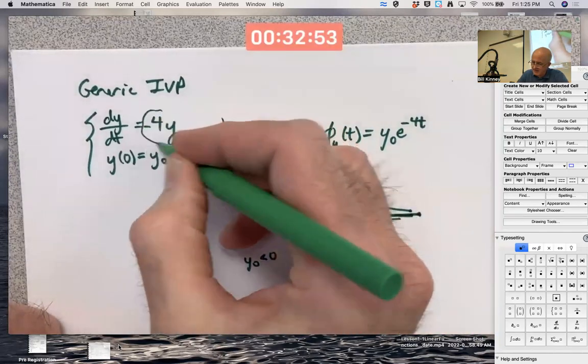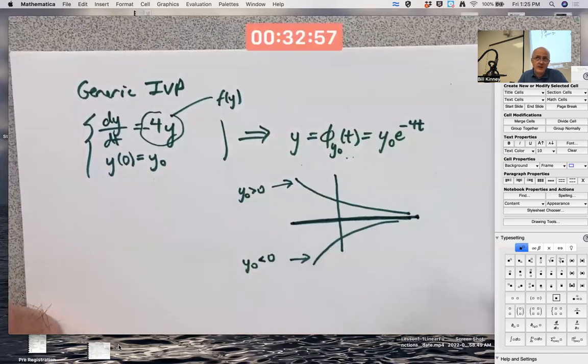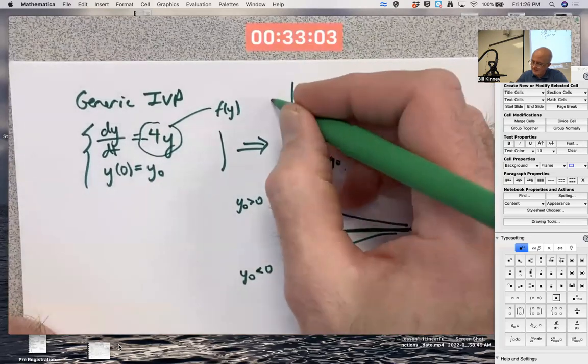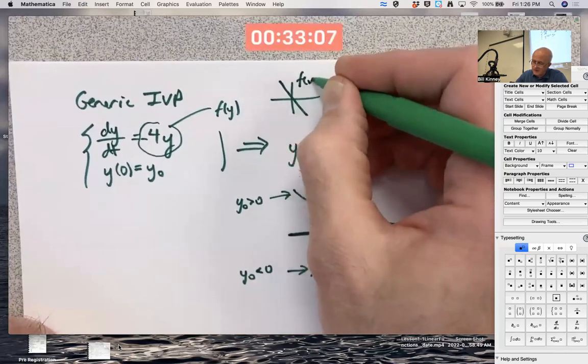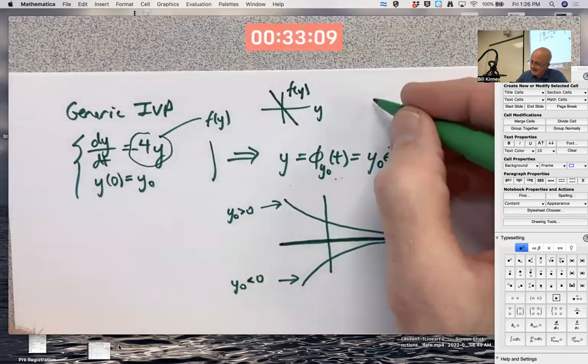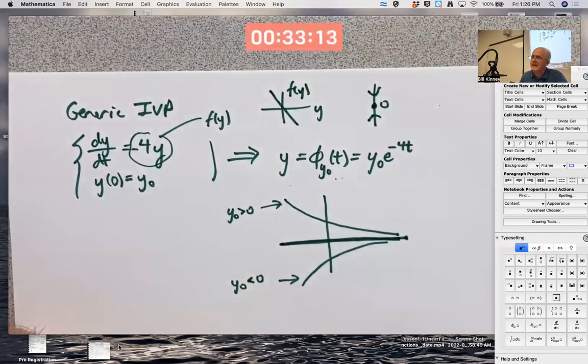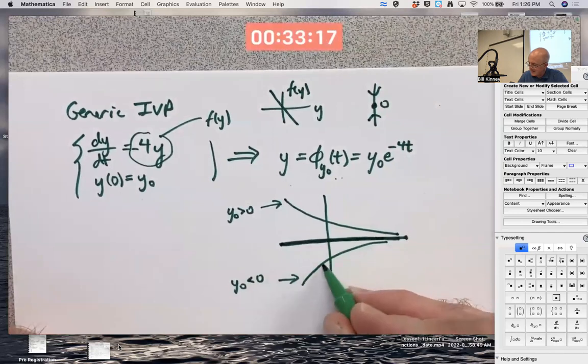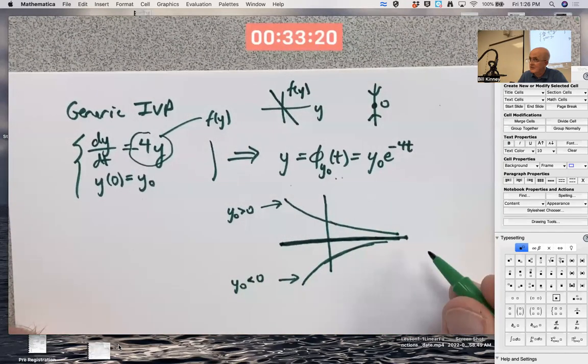Your right-hand side function here, your f of y, is a linear function. That's what makes this a linear differential equation. If you graph it, f of y, it looks like this. And you could think about the phase line. The phase line is going to look like this. And 0 is going to be a sink. Just like this equilibrium solution is a sink in a sense. All other solutions approach it as t goes to infinity.